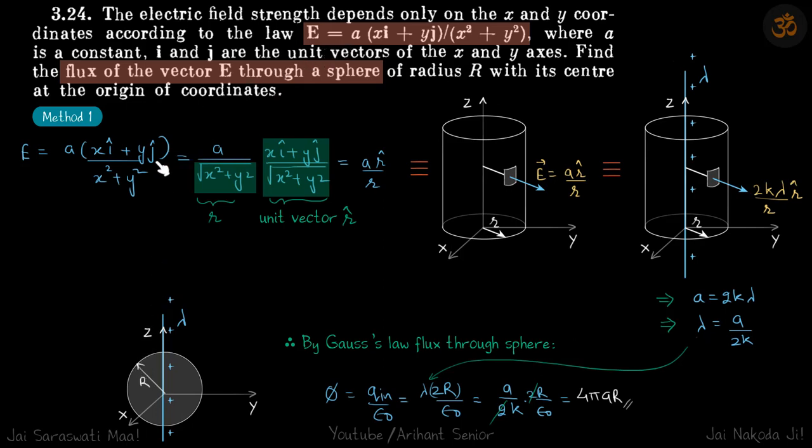So, electric field is given. Let us do by method 1 which I like. If you break this into root of x square plus y square and root of x square plus y square, you can write it like this.